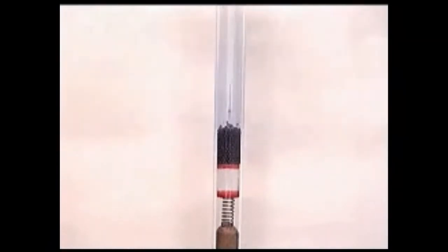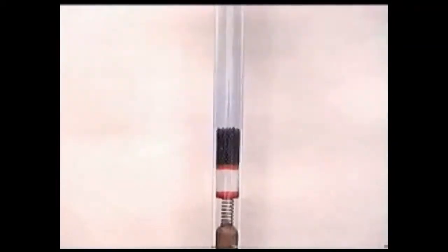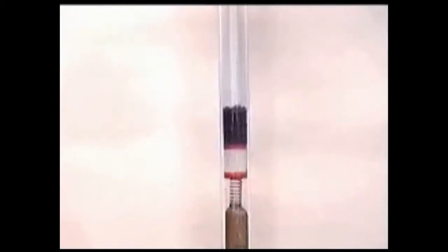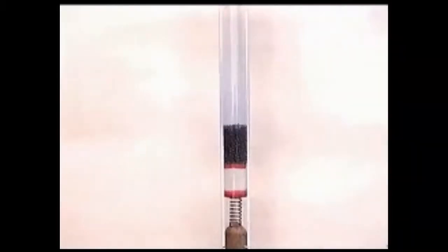Here we have a long glass tube in which a piston is fitted with a spring. The piston is pushed from below with a wooden pole. The compression of the spring is an indication of how much force is applied.